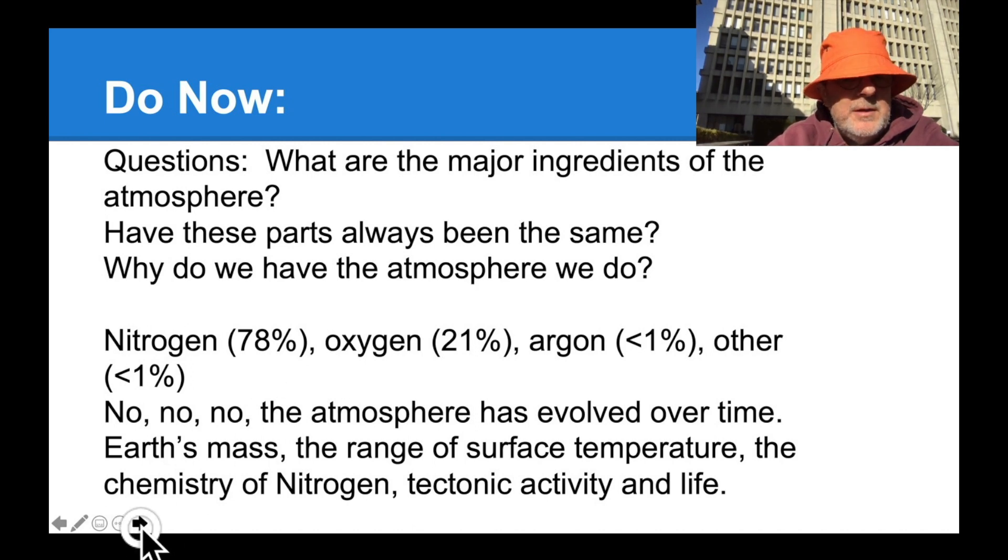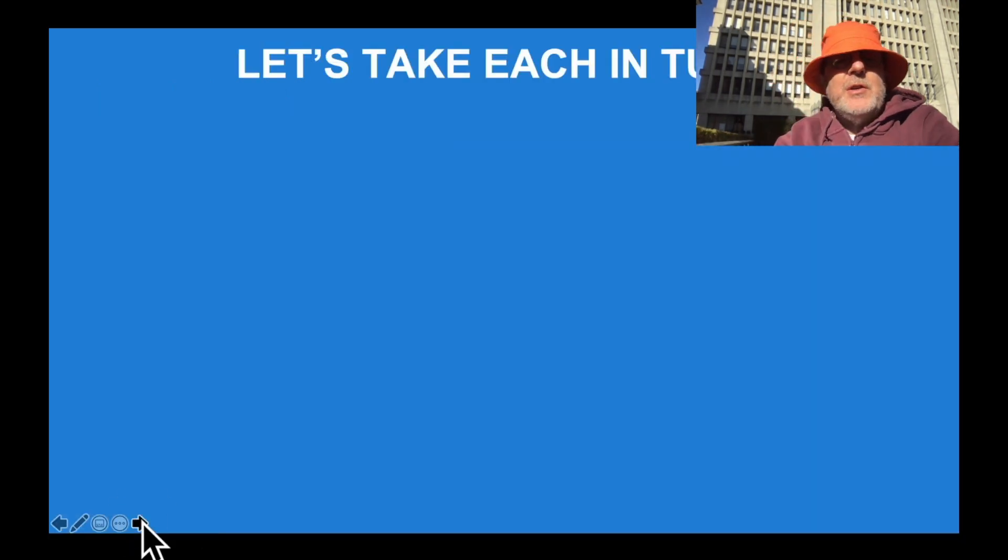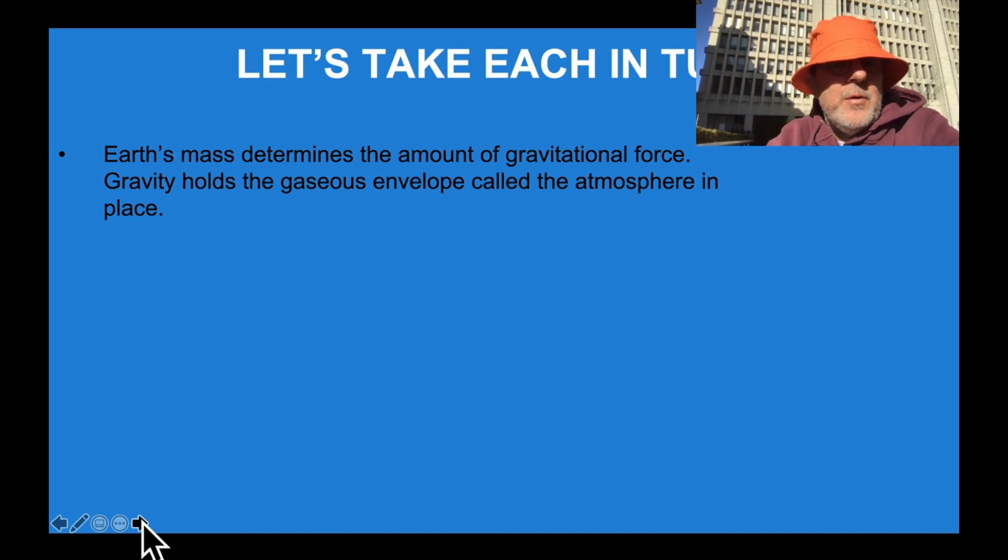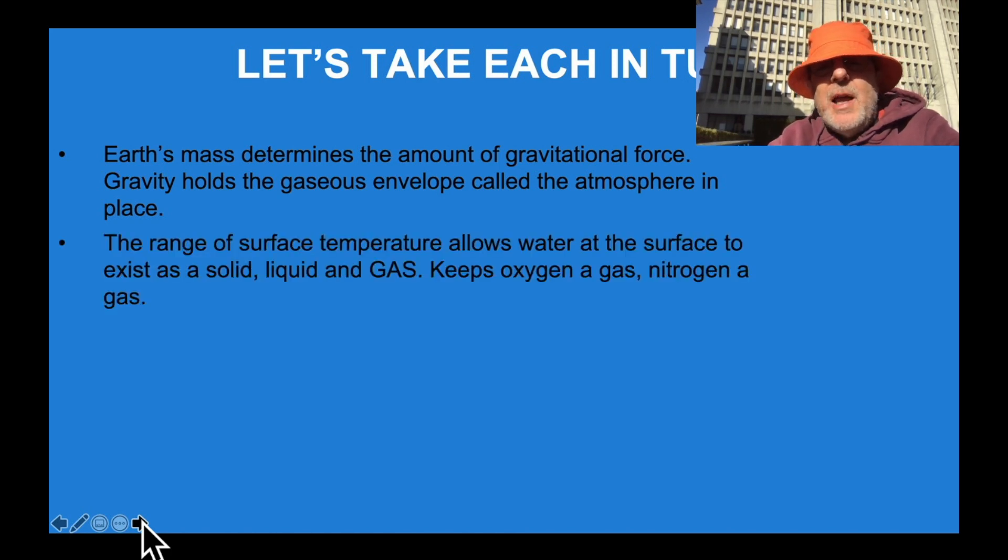For some reason, my slideshow is frozen. Here we go. Let's take each in turn, though, each of these questions. So, Earth's mass determines the amount of gravitational force. Gravity holds the gaseous envelope called the atmosphere in place. The range of surface temperature allows water at the surface to exist as a solid liquid and gas, keeps oxygen a gas, nitrogen a gas. So these are things that are influencing our atmosphere, the mass of the Earth, determining that we can hold on to our gaseous components that are of enough density. We do lose some gases. Hydrogen and helium tend to leave the atmosphere because they're not dense enough. But we can hold the nitrogen, we can hold the oxygen, we can hold the water vapor, the carbon dioxide.